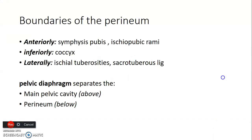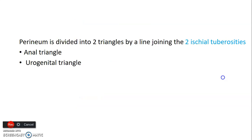The perineum is the region bordered by the pubic symphysis anteriorly, as well as the ischiopubic rami. Posteriorly we have the coccyx, and laterally the ischial tuberosities and sacrotuberous ligament. The pelvic diaphragm separates the main pelvic cavity above from the perineum below. The perineum is divided into two triangles by a line joining the two ischial tuberosities.